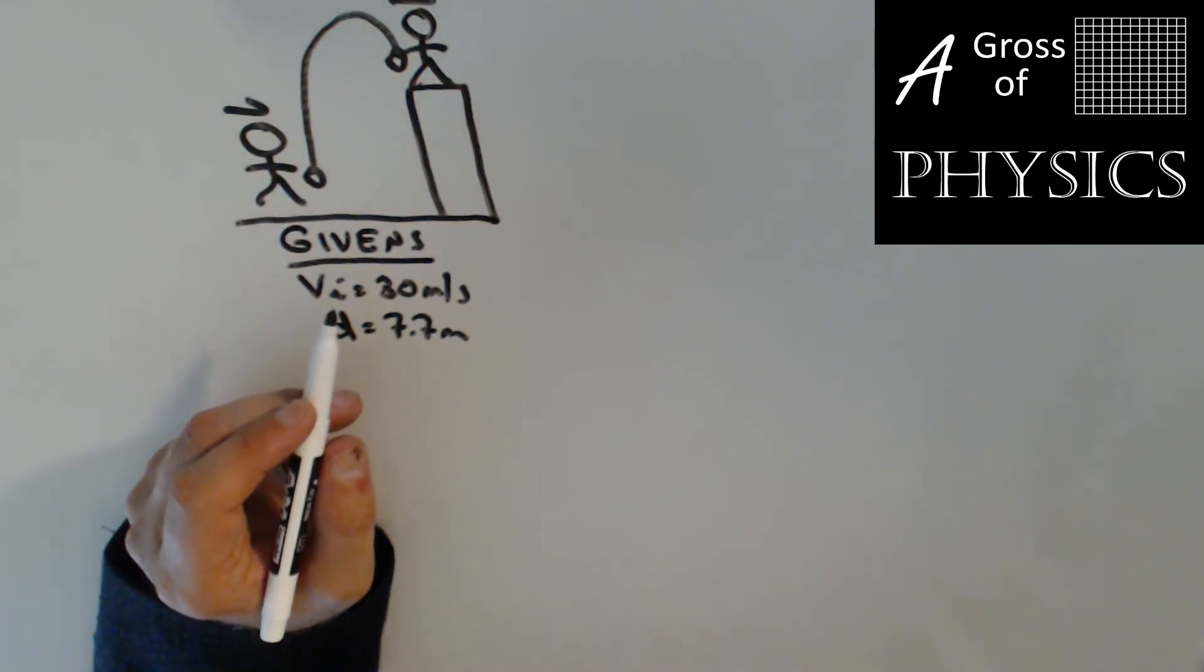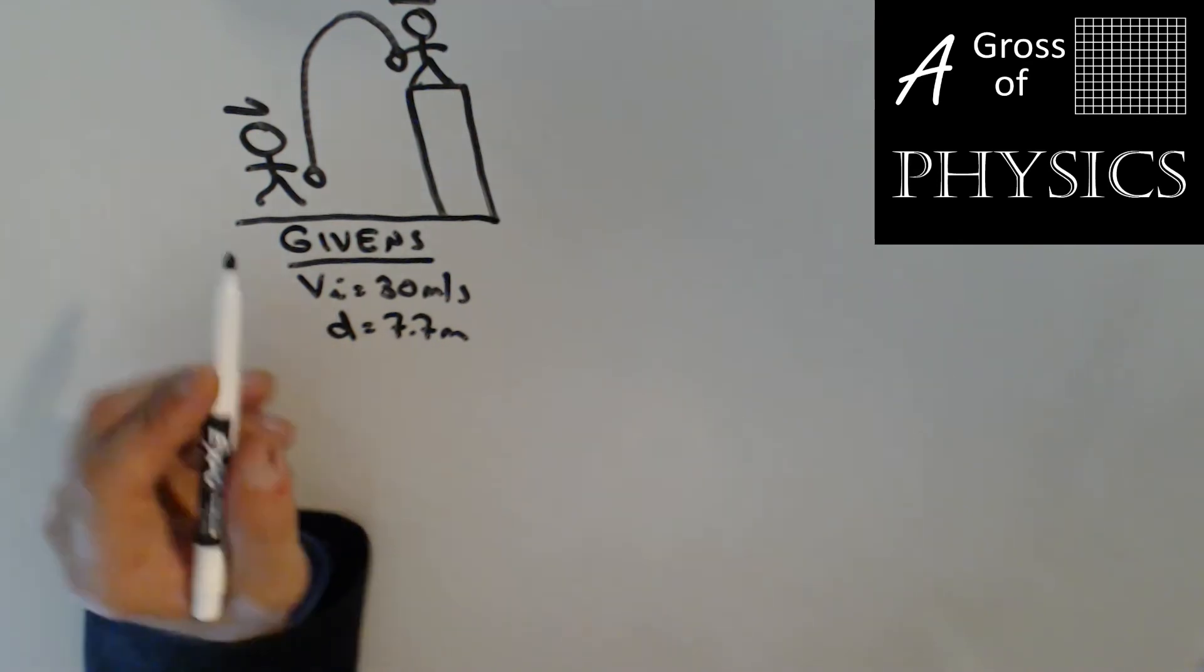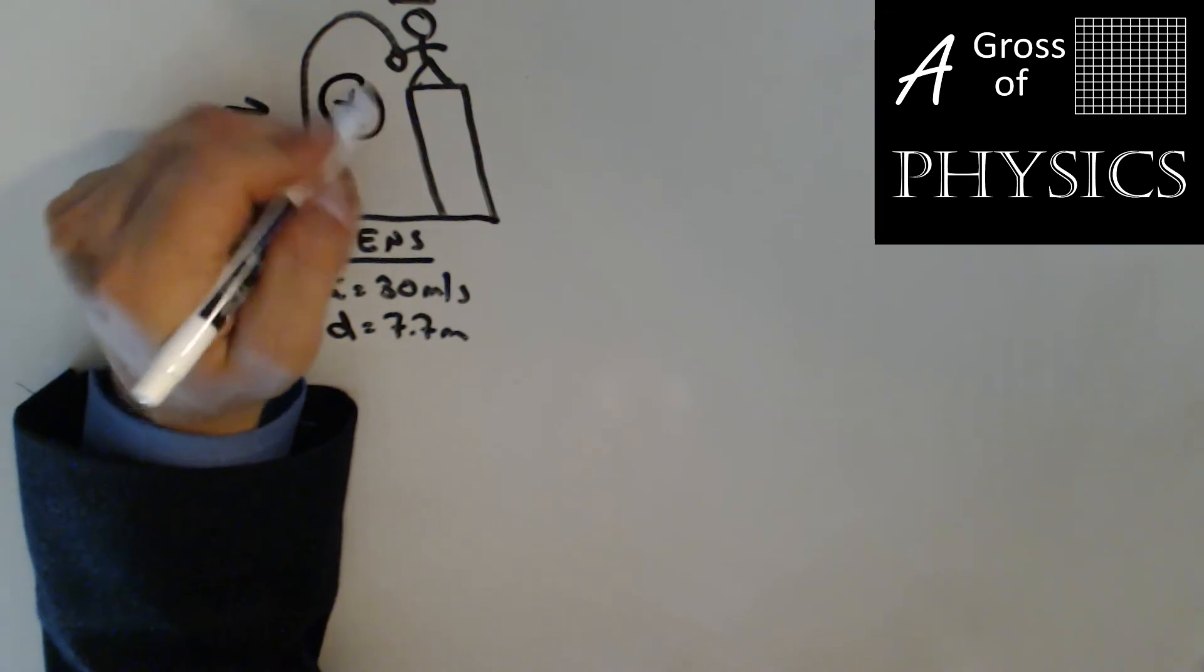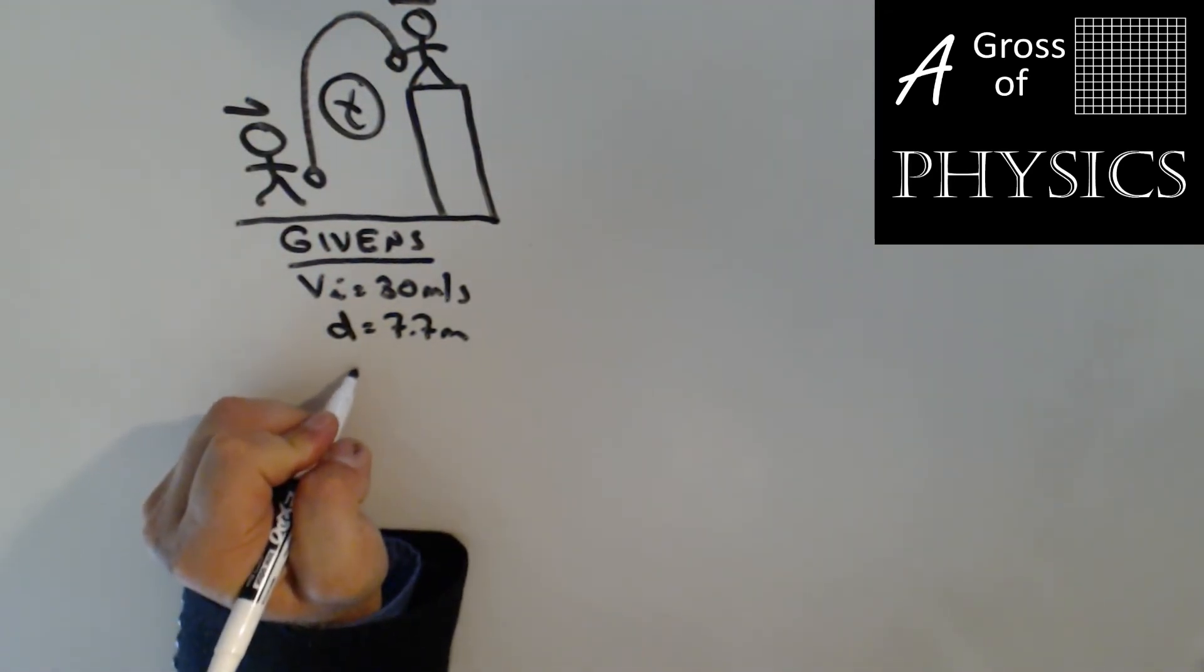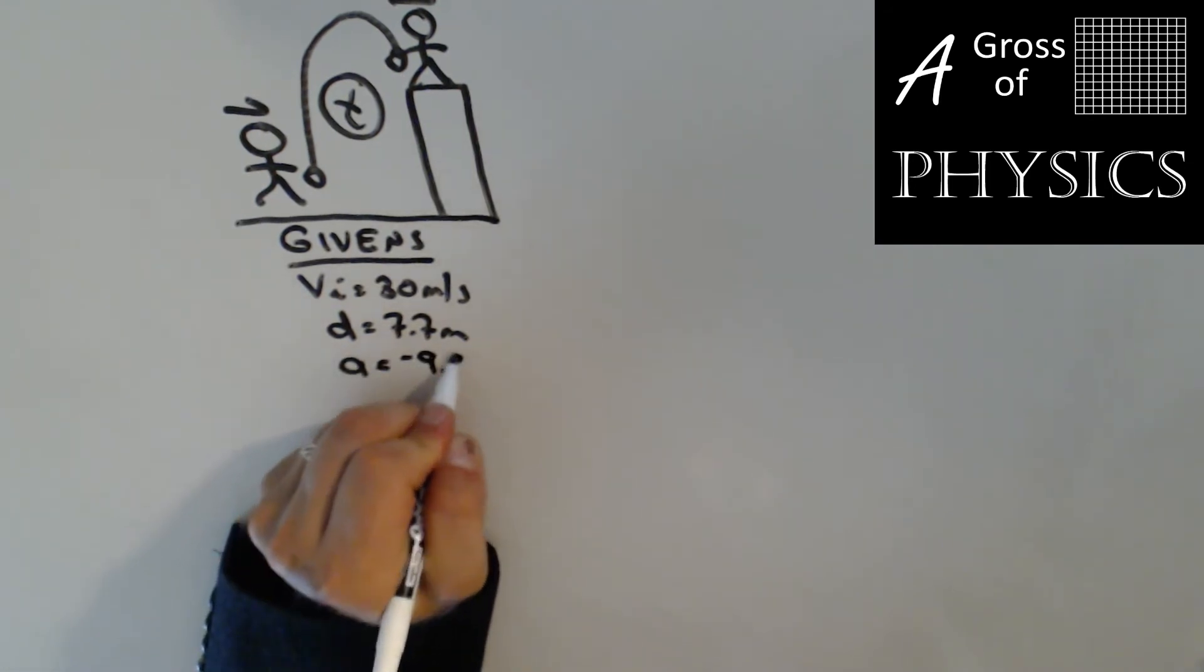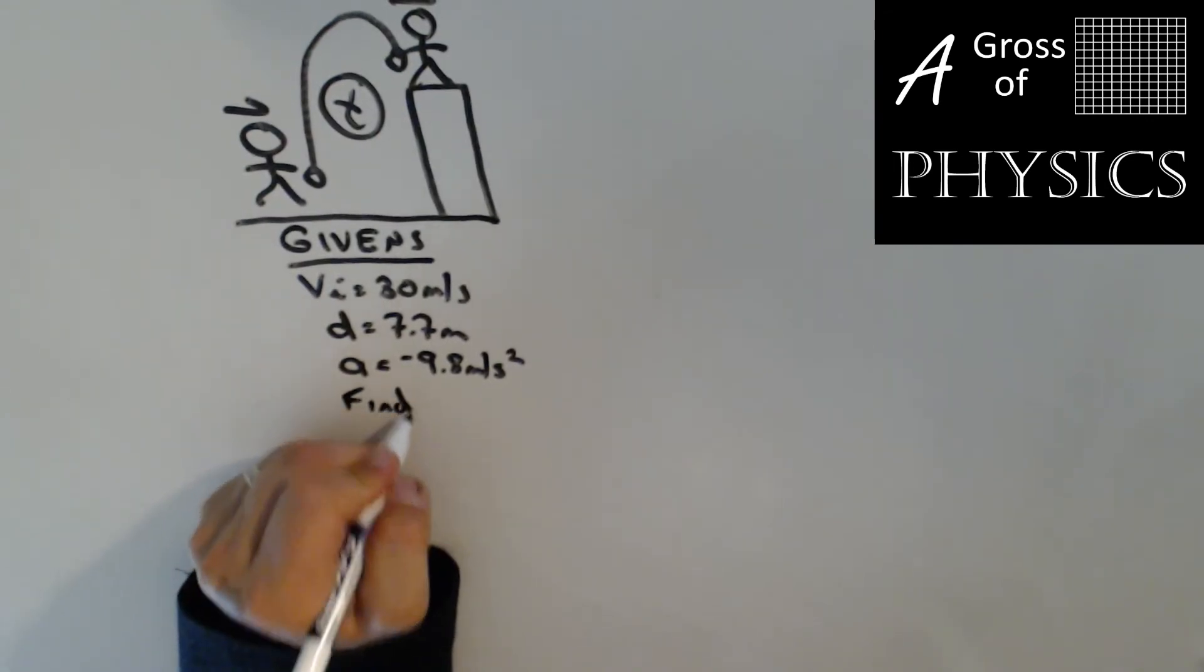It says how long does the fan have to react for the ball to drop into their glove? So we want to find out the time before the ball drops in their glove. Now the other thing we need to remember is that we're on the earth's surface: negative 9.8 meters per second squared, and we want to find t.